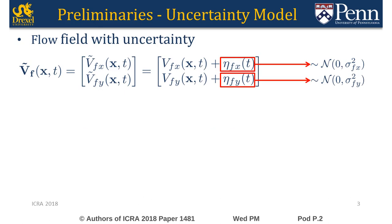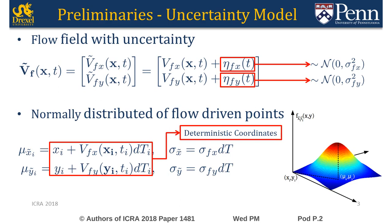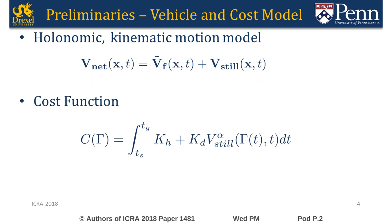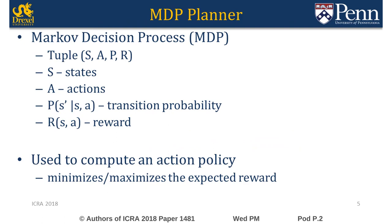We assume that the two components of the flow velocity vector are corrupted by noise drawn from two independent zero-mean Gaussian distributions. With this model, the position of a particle driven by the flow has a bivariate Gaussian distribution. We consider a holonomic kinematic motion model for the vehicle. The total energy expended by the vehicle is considered as a cost function, consisting of the hotel load and the energy required to overcome drag.